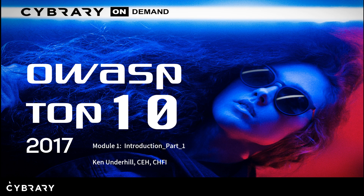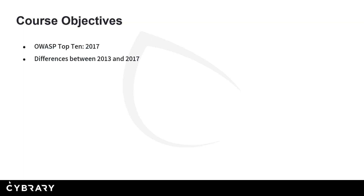I'll talk about the course structure. We'll also talk about who I am as your instructor, as well as some of the topics we're going to cover in this particular course. The main objectives for this entire course are: we're going to learn what the OWASP Top 10 for 2017 is, and we'll also talk about the differences between the 2013 version and the 2017 version of the OWASP Top 10.